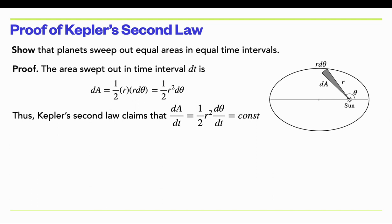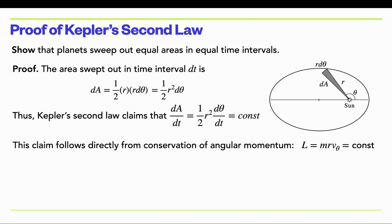Kepler's second law claims that if you sweep out equal areas in equal time intervals, the time derivative of the area swept out by the planet is just a constant. So Kepler's second law claims that one half r² dθ/dt is a constant. To prove that this is true, we're going to use conservation of angular momentum.